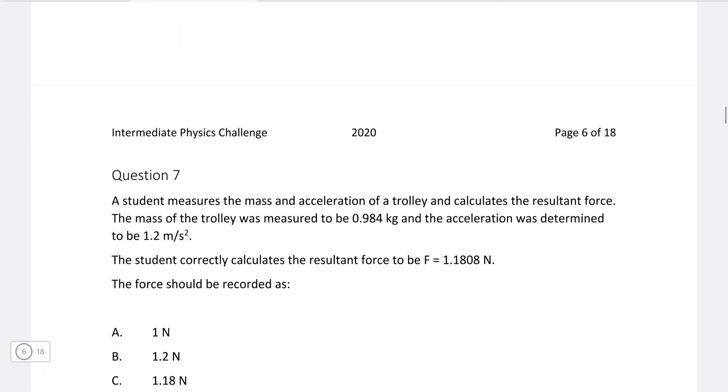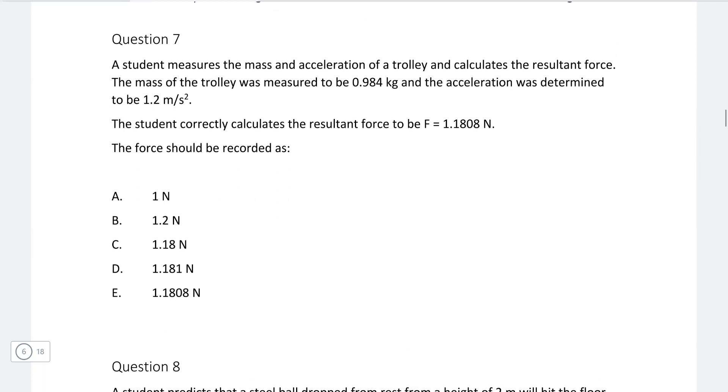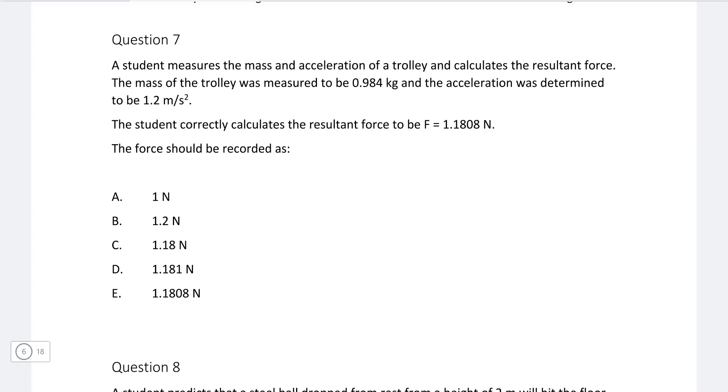Okay, next one, question seven. A student measures the mass and acceleration of a trolley and calculates the resultant force. The mass of the trolley was measured to be 0.984 kilograms and the acceleration was determined to be 1.2 meters per second squared. And the student correctly calculates the resultant force to be equal to that number. The force should be recorded as?